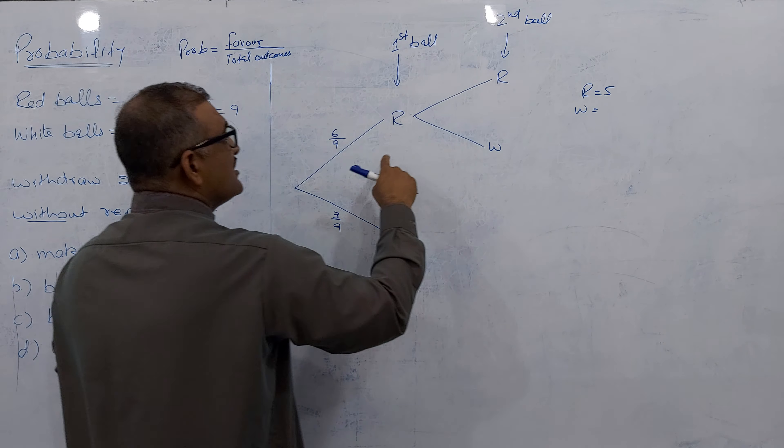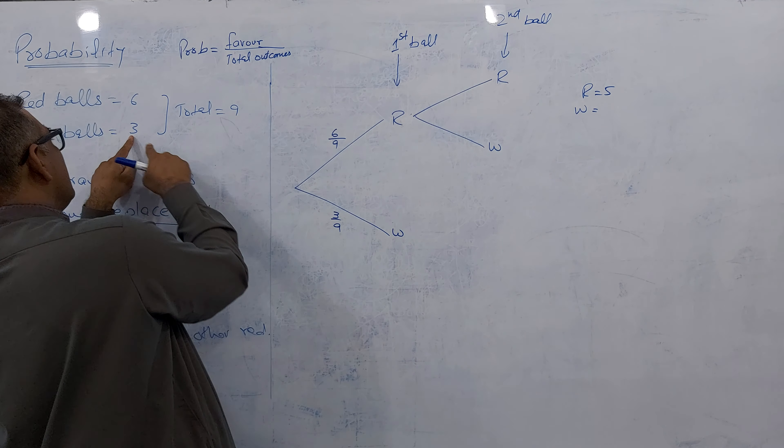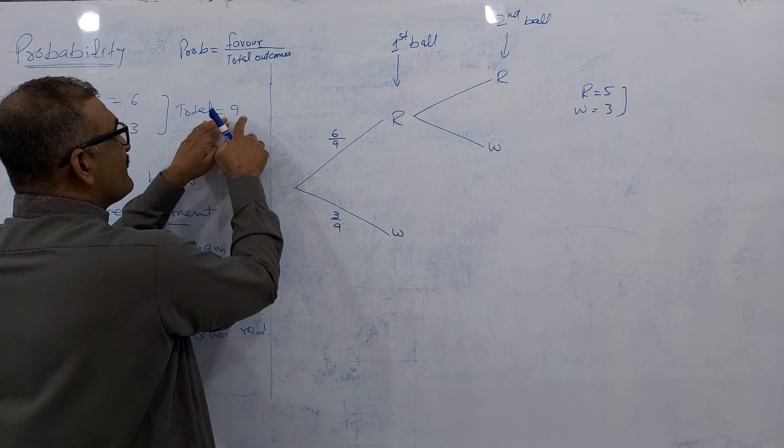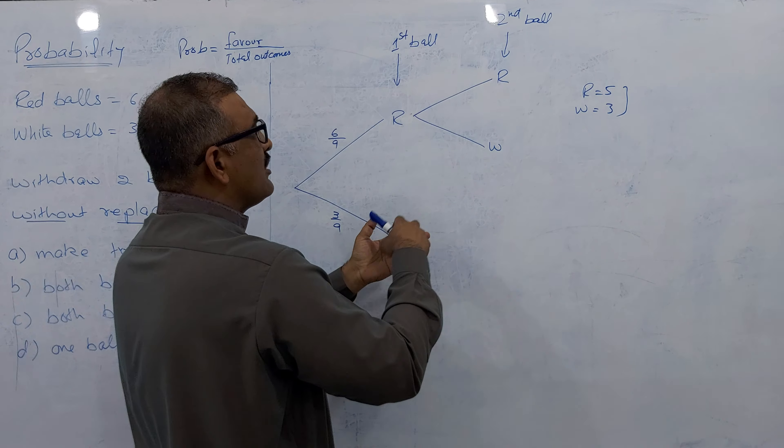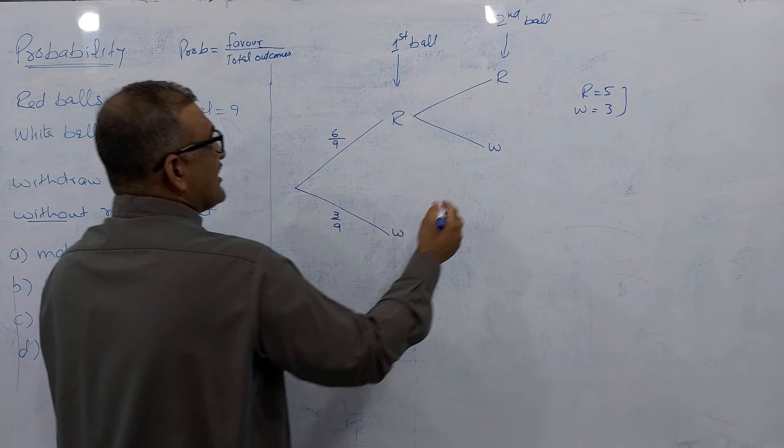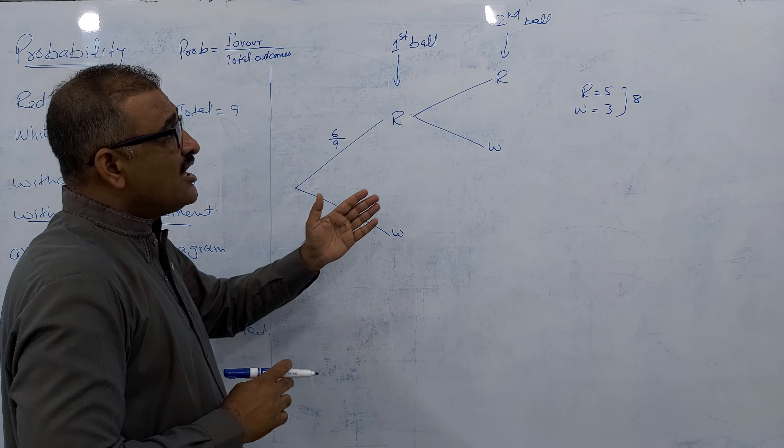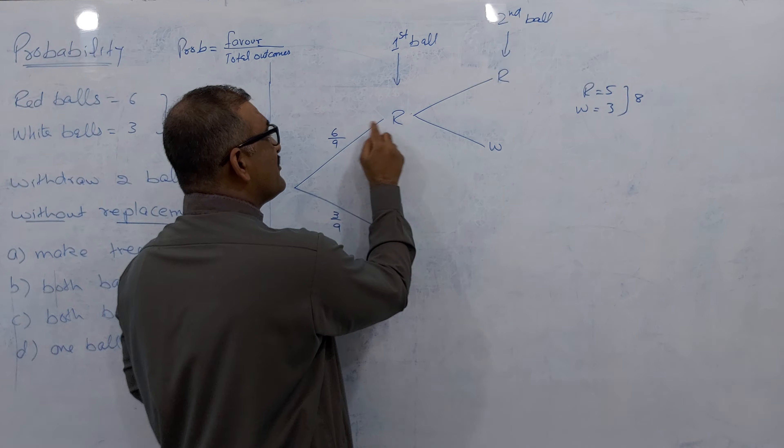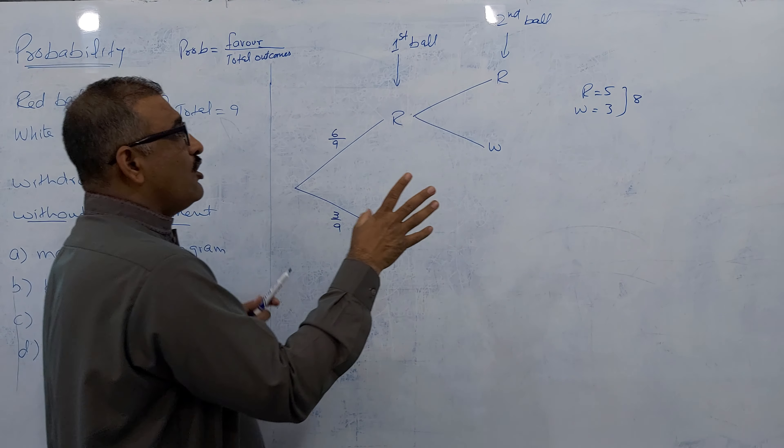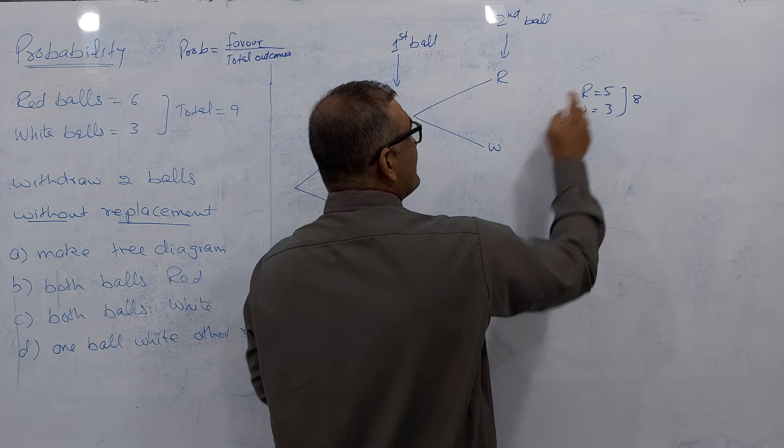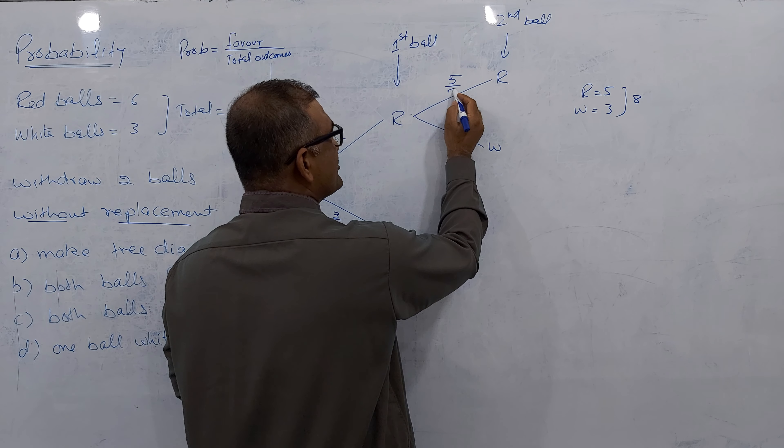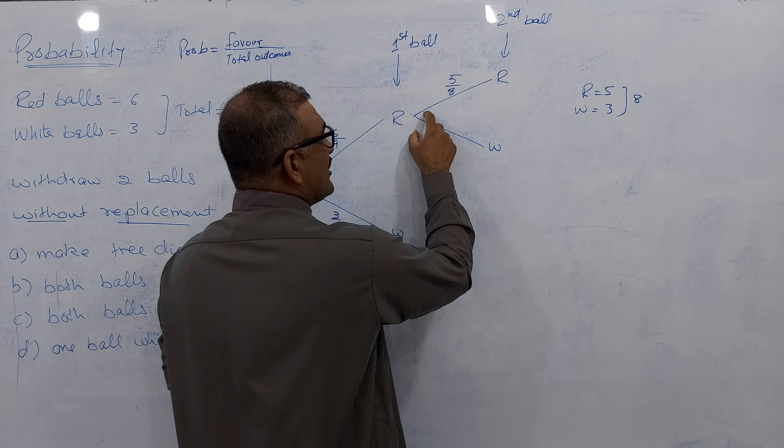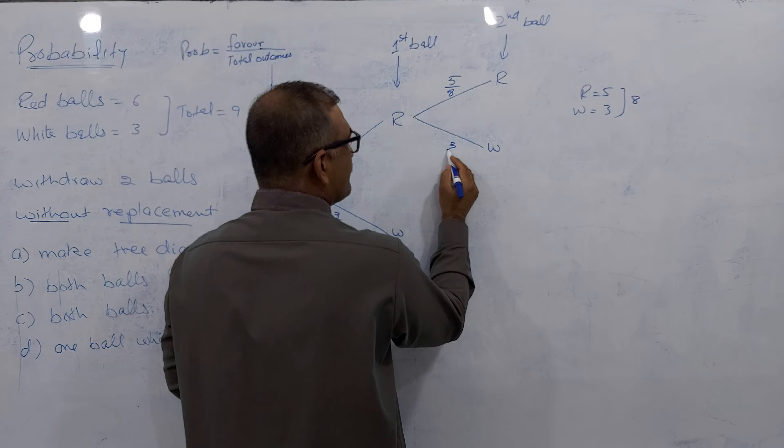Because I took red out, no effect on the white. All 3 whites inside. But total 9 before, because I took one red ball out and kept out of the bag, this 9 becomes 8. What is the chance of this red? 5 by 8. And because I took red out, what's the chance of white? 3 by 8.